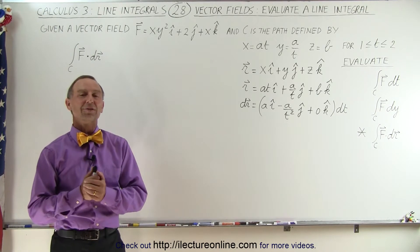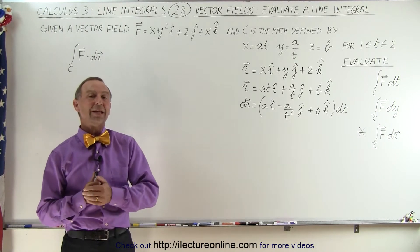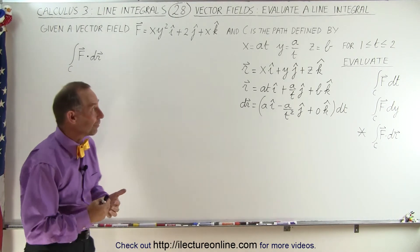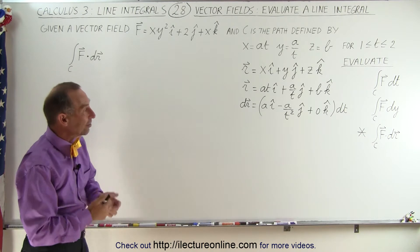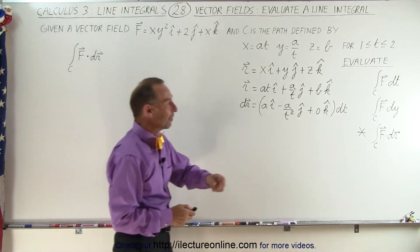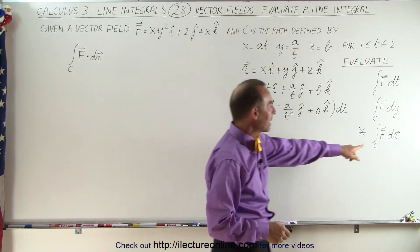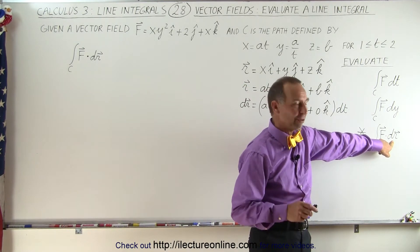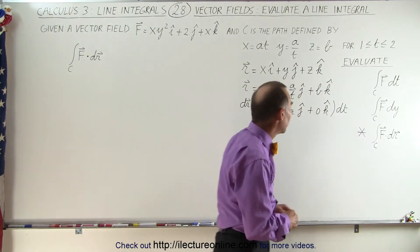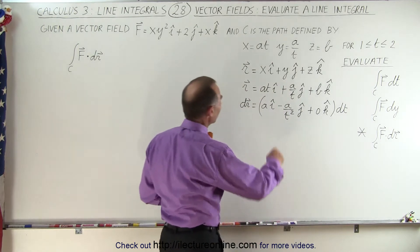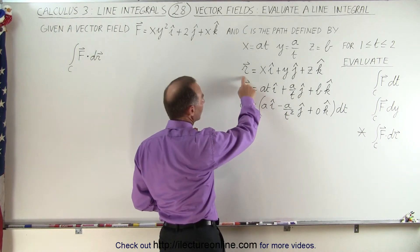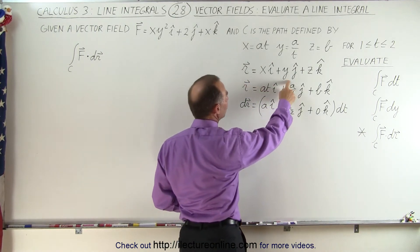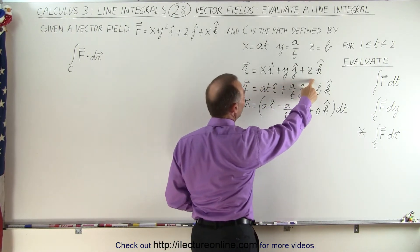Welcome to Electron Line. Now let's do our third evaluation of a line integral. In this case our differential is going to be the derivative of the position vector r. The position vector r is defined as xi plus yj plus zk.